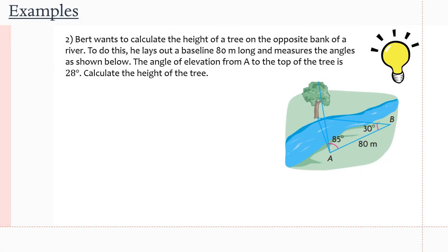Moving on to question two: Bert wants to calculate the height of a tree on the opposite bank of a river. He lays out a baseline 80 meters long and measures the angles shown — 30 degrees and 85 degrees. The angle of elevation from point A to the top of the tree is 28 degrees. We need to calculate the height of the tree.